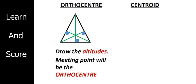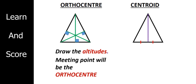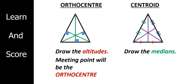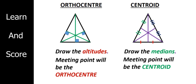Now let's discuss about centroid. I drew a triangle and centroid is the meeting point of all the medians. A median is a line segment from a vertex to the midpoint of the opposite side. I have drawn a purple colored median, and similarly we have to draw the remaining two medians. All three medians meet each other, and that meeting point is the centroid of this triangle.